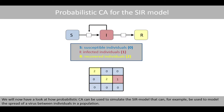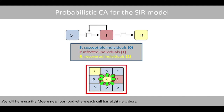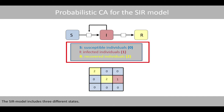We now have a look at how probabilistic cellular automata can be used to simulate the SIR model, which can be used to model the spread of a virus between individuals in a population. We'll use the Moore neighborhood where each cell has eight neighbors. The SIR model includes three different states.